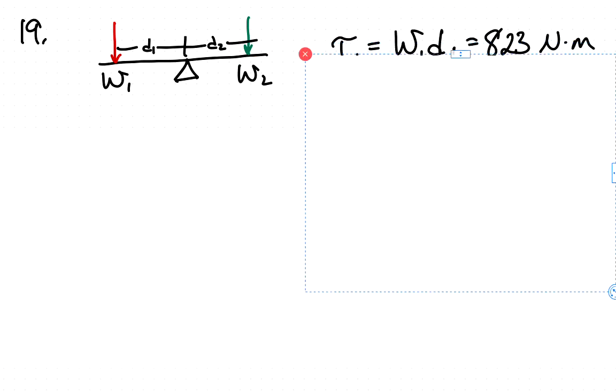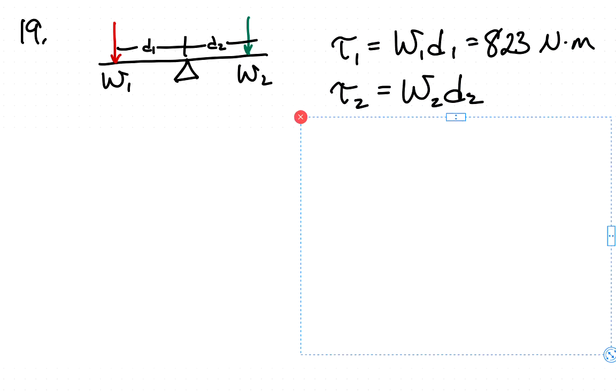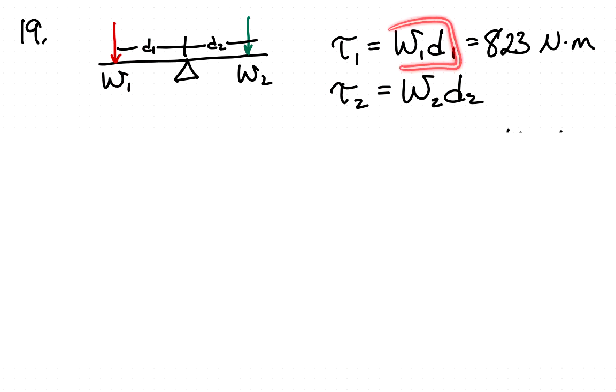And so we can figure out first, we're asked what the torque is that Brett generates. So that's just the weight times the distance. If we say that counterclockwise is positive, then that is just 823 newton meters because this is simply 70 times g times 1.2.